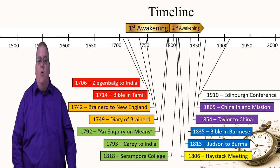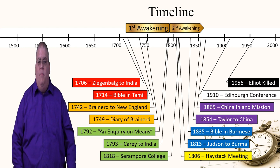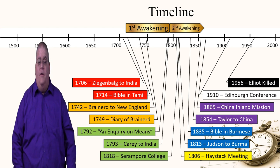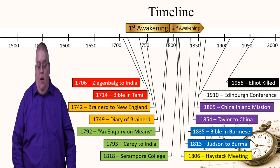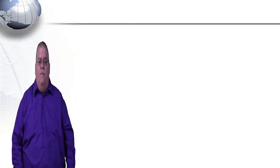The Edinburgh Conference on Missions took place in 1910. And in 1956, Jim Elliot and others were killed by natives they were trying to reach. So this section covers just a few events spread over a large time span. Now let's examine each of these subjects in more depth.